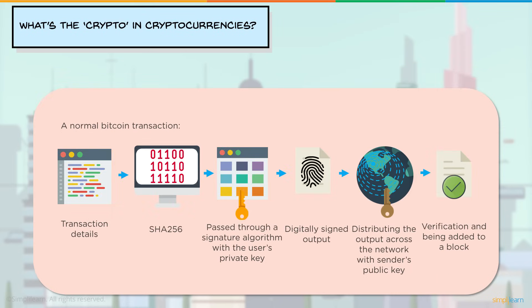In a normal Bitcoin transaction: first you have the transaction details — who you want to send to and how many bitcoins. This is passed through the SHA-256 hashing algorithm. The output is then passed through a signature algorithm with the user's private key to uniquely identify the user. This output is distributed across the network for people to verify using the sender's public key. The people who verify the transaction are known as miners. After this, the transaction and several others are added to the blockchain, where it cannot be changed.